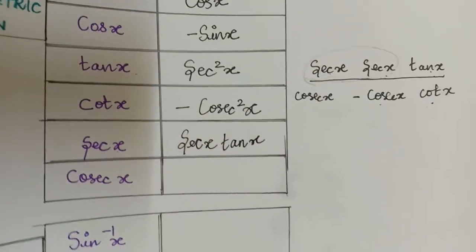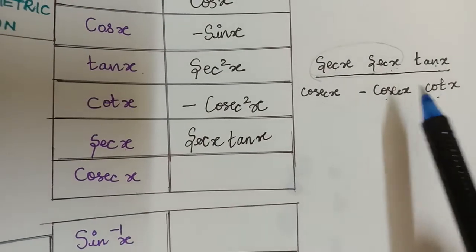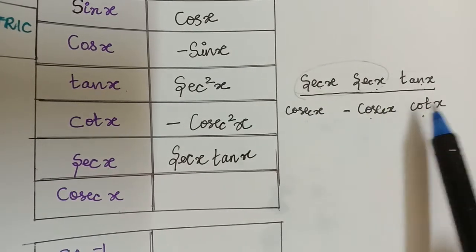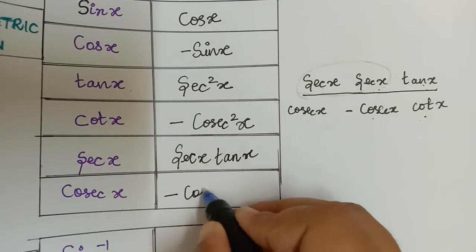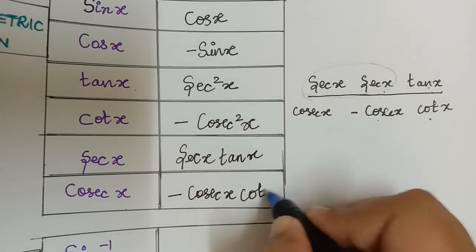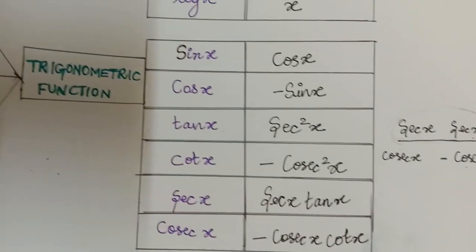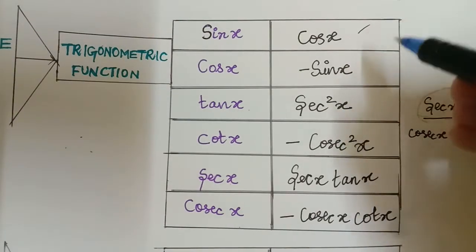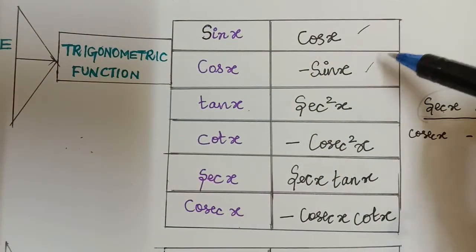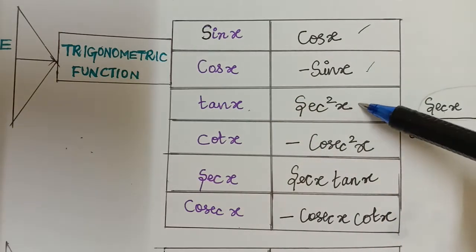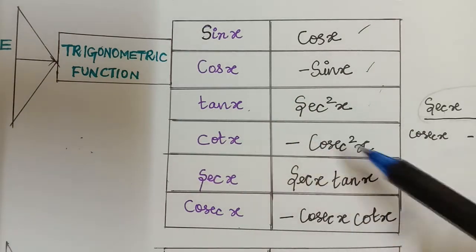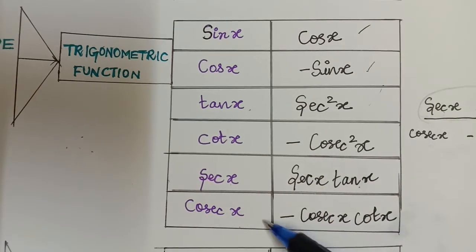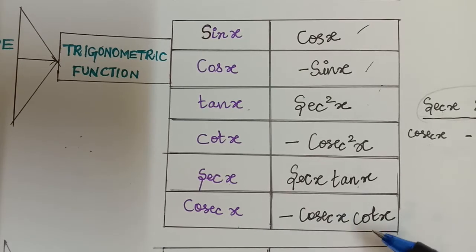The differentiation of cosec x: locate cosec x, leave it, and multiply the other two terms to get minus cosec x·cot x. To summarize: differentiation of sin x is cos x; cos x gives minus sin x; tan x gives sec²x; cot x gives minus cosec²x; sec x gives sec x·tan x; and cosec x gives minus cosec x·cot x.